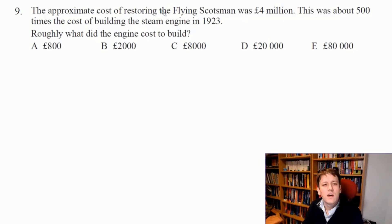In this question we're told the cost of restoring the Flying Scotsman was 4 million pounds, which is 500 times the cost of building this steam engine in 1923. So how much did it cost to build? We need to do 4 million divided by 500. Now 4 million is a 4 with 6 zeros after it, and if I divide that by 500, then I can divide top and bottom by 100, effectively cross out two zeros. 40 divided by 5 is 8, so we're just going to be left with an 8 here with three zeros. The answer is C, 8,000 pounds.